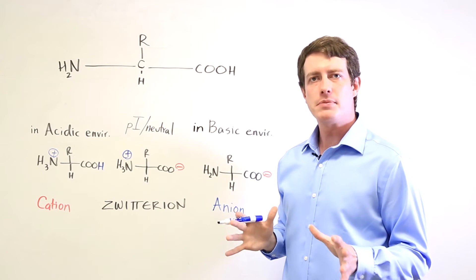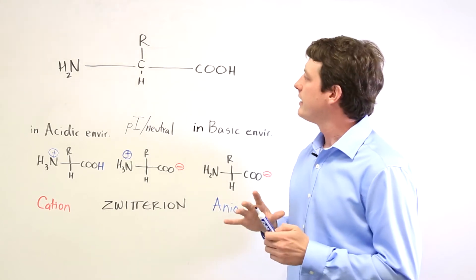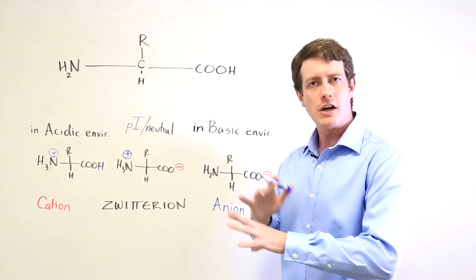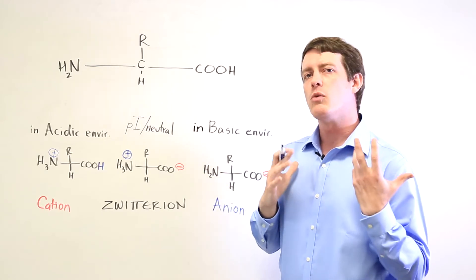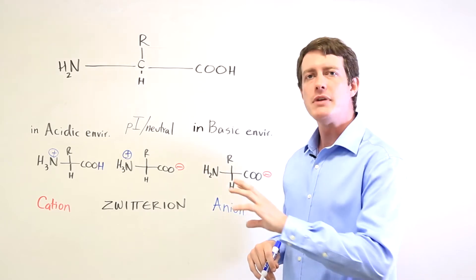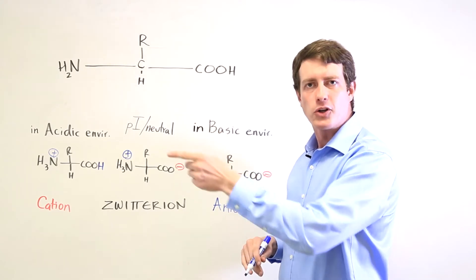Something else that they may bring up on the MCAT is the identity of an L amino acid. Remember that L and D from stereochemistry determine which way a molecule rotates plane polarized light. L means that it rotates the light counterclockwise.